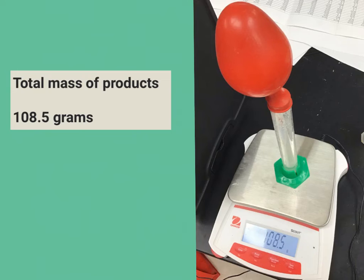Now, if we did not include the balloon on top of the test tube, then some of our gas that was produced during the reaction could have escaped and maybe wouldn't have been included in the final measurement. If this was the case, we might have ended up with less than the 108.5 grams. This does not mean that any of our products were destroyed during the reaction.